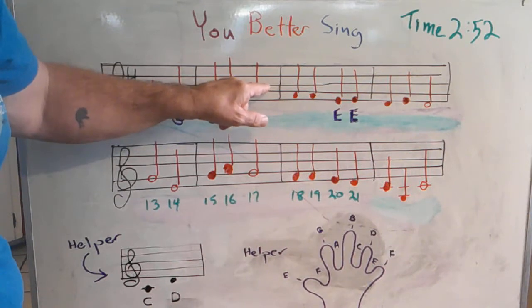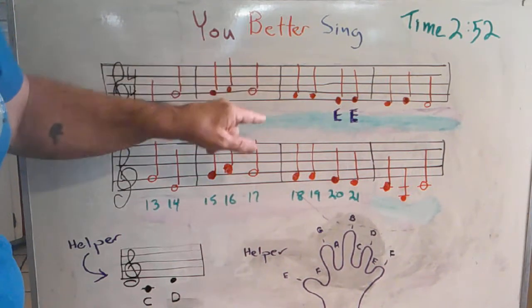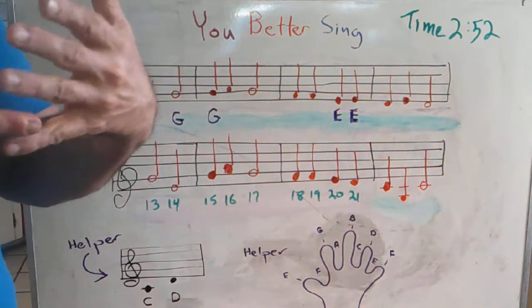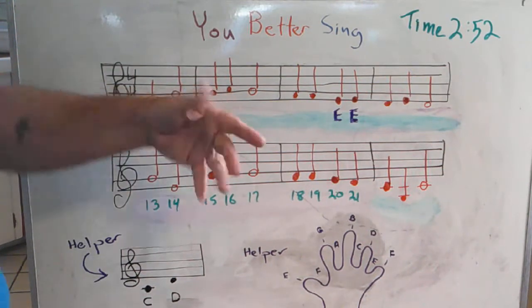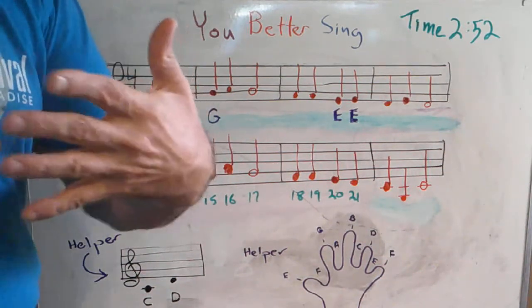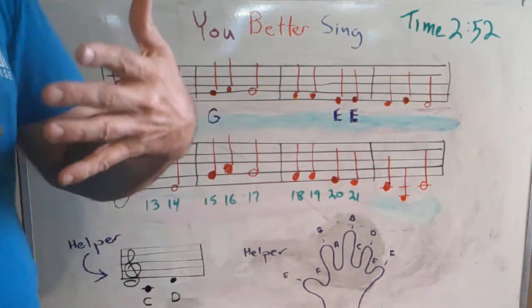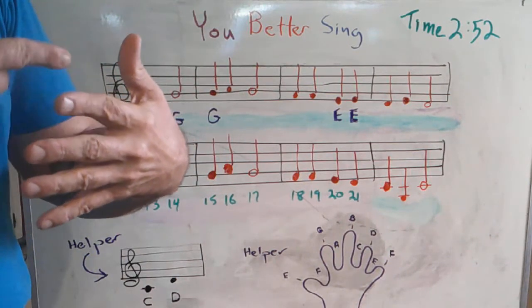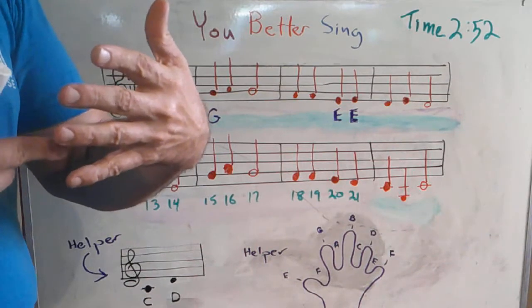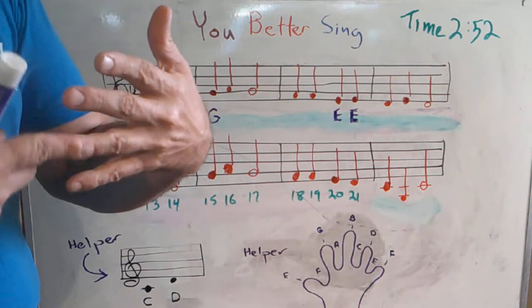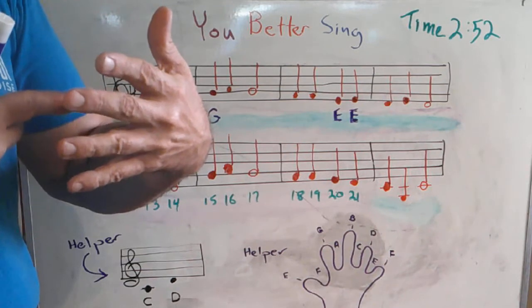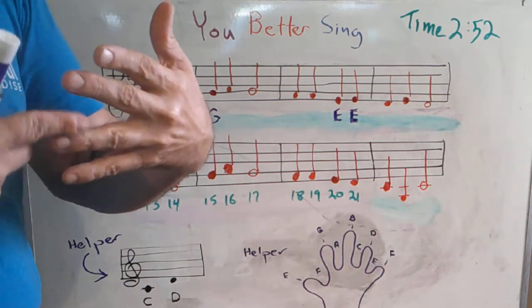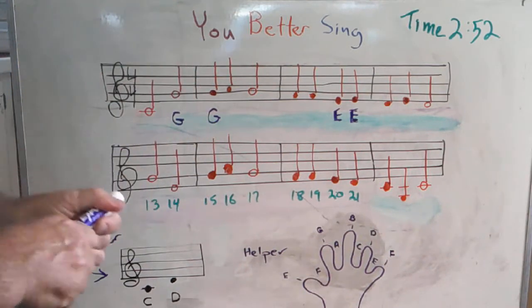This is the first space, no, this is the second space. So if we spell the word FACE, F-A-C-E, we're only going up from F to A. So that's what this note is. It's an A.